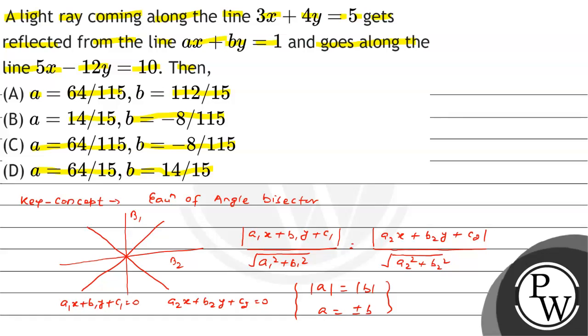With this concept, if we start the problem, it is something like this: we have one line given, this line is ax plus by equal 1, and one line that is incident on this line and then reflects.